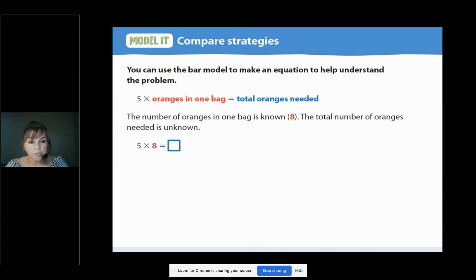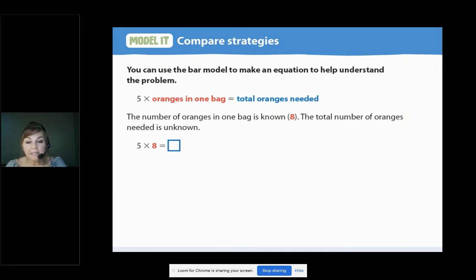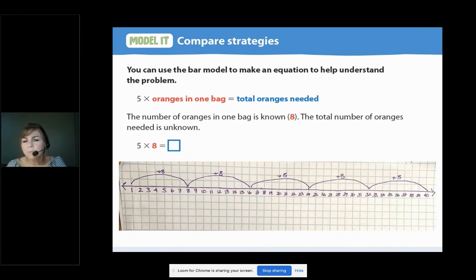Let's read the next sentence. The number of oranges in one bag is known. It's eight. The total number of oranges needed is unknown. Hey, there's that unknown word again. How are they showing the unknown at the bottom of this slide? Point to it. Yeah, it's the empty box. Why? Pause here so you can jot down some ideas. Okay. Did you say something like it's what we're trying to find out, the total number of oranges? Or maybe you remembered from earlier and just put a question mark. Smart.